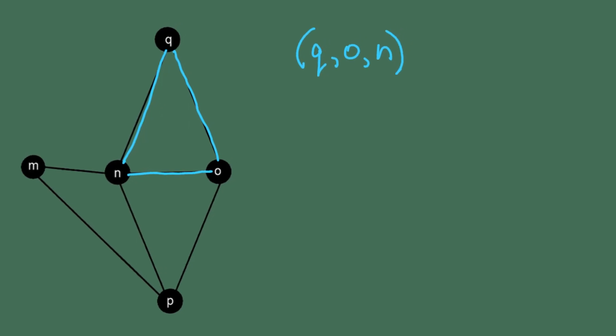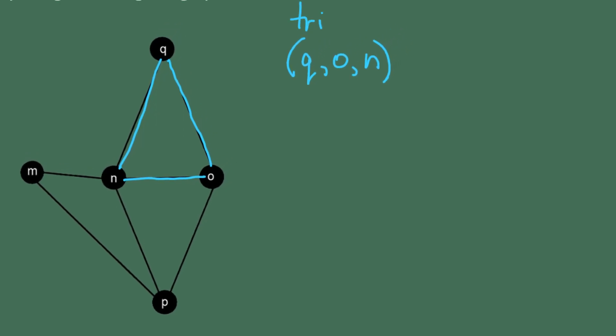So let's go ahead and when they ask you to identify it, they mean name it. So we're going to give it a name. We're going to start with one of the vertices. It doesn't matter which one. So I'm going to start with Q and then we're going to go to O and then to N and then we get back to Q. So we put a parenthesis. So one triangle that's in this graph is QON.